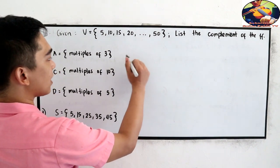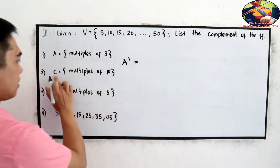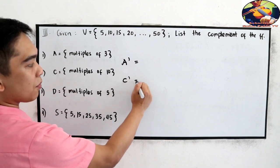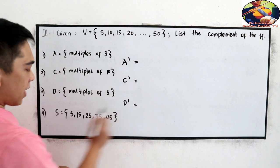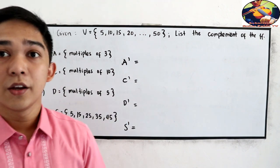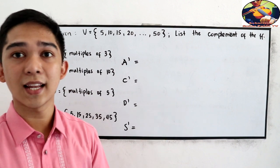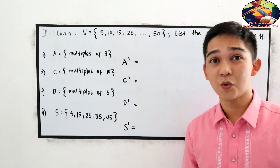You're going to get number 1 for A prime, number 2, C prime or C complement, number 3, D complement, and S complement. If you want to answer, you can pause the video. Then let's check your work later. And now let's check your work.